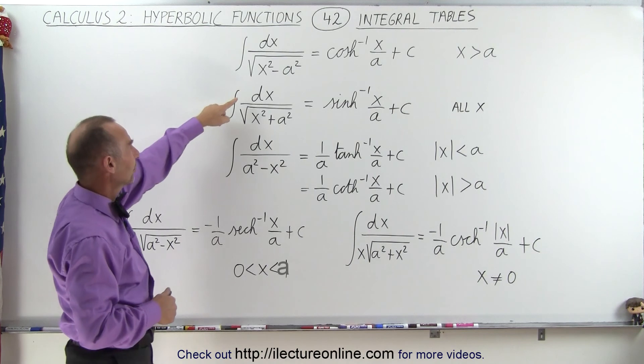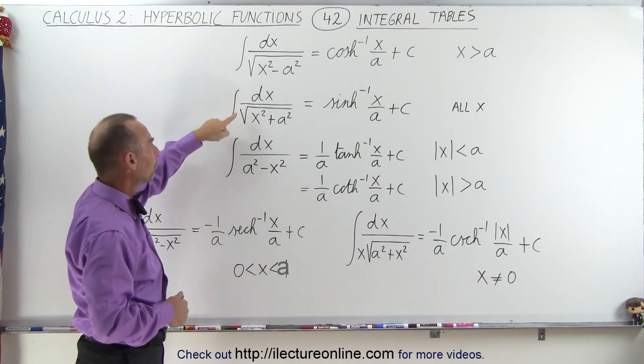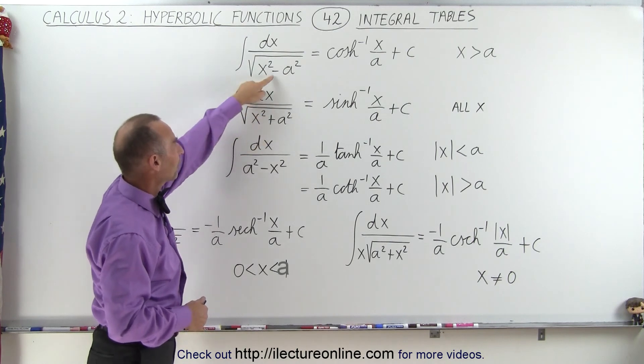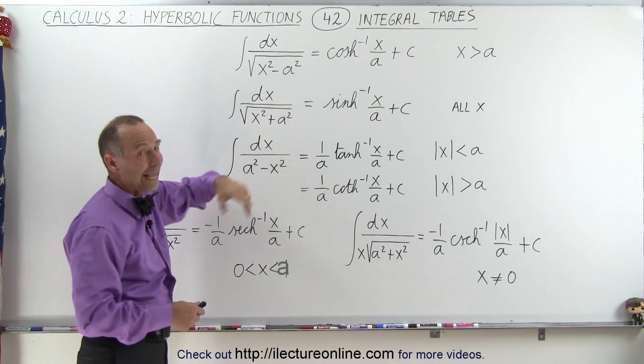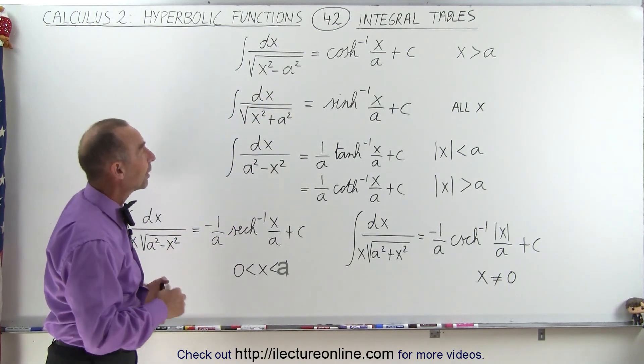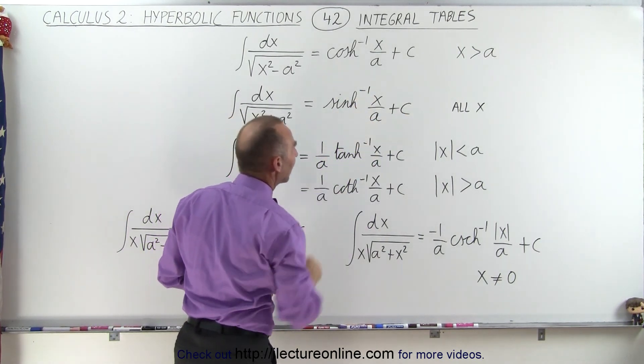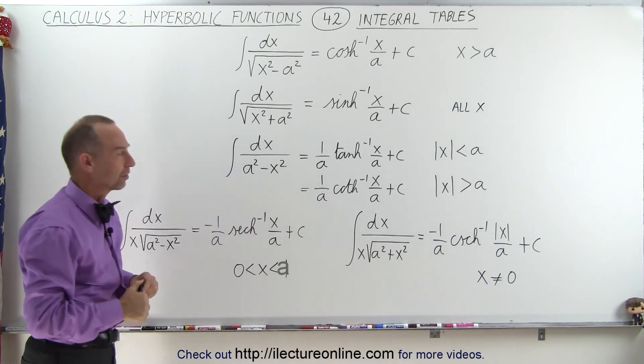And if we have an integral of dx over the square root of x squared plus a squared, notice the only difference is that this is a minus, this is a plus, again a being a constant, then we get the solution to be the inverse hyperbolic sine of x over a, and it's good for all values of x.